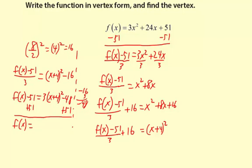So that's going to leave f of x equals 3 times x plus 4 in parentheses squared, and then negative 48 plus 51 is 3, so plus 3. So there's our function in vertex form, and if you're thinking this is a long process, you're absolutely right. You just have to be patient with yourself, take it one step at a time.